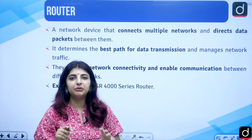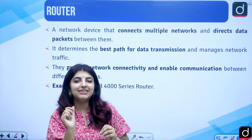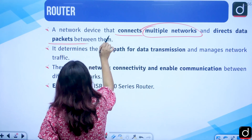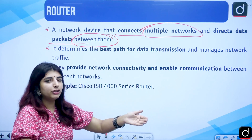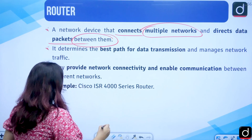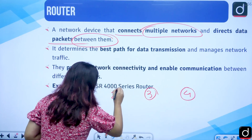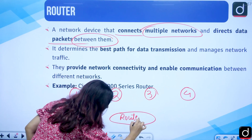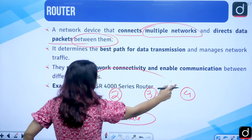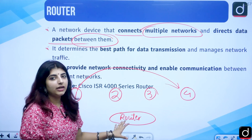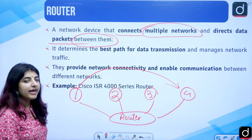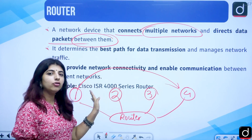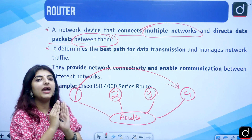The first device we are going to talk about is a router. The name itself suggests routing — it sends data packets and connects multiple networks, directing data packets between them. For example, if four computers are in a room all connected to the router and you want to send data from your computer to computer number 4, the router will direct that data to computer 4 only, routing the data packet to where it is supposed to be.